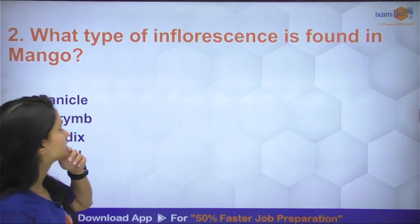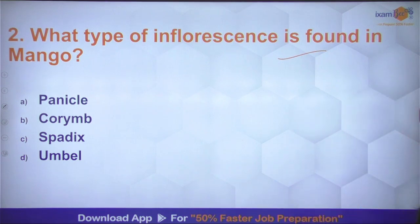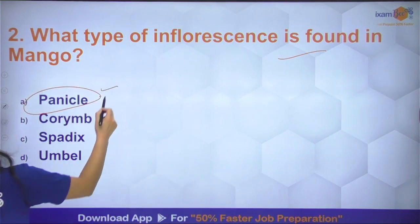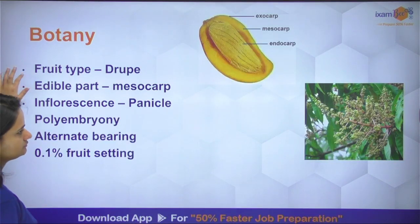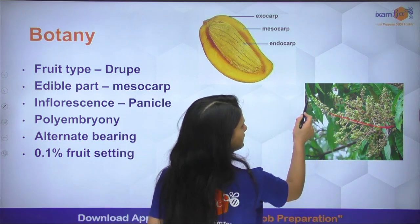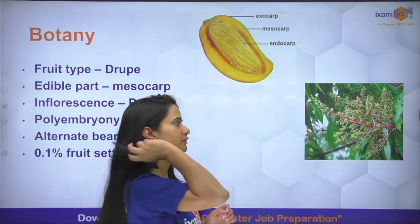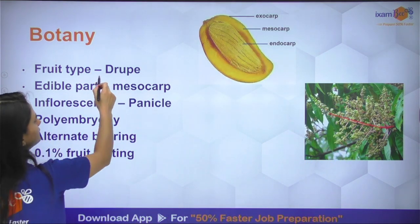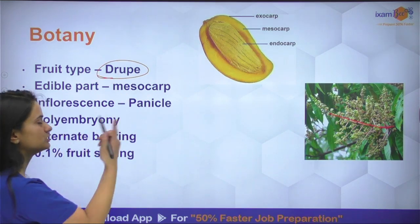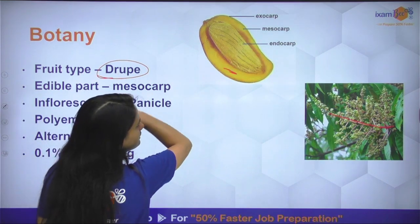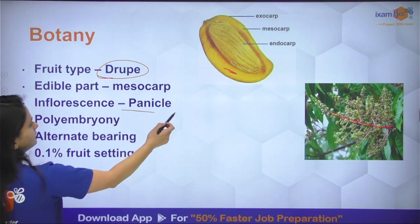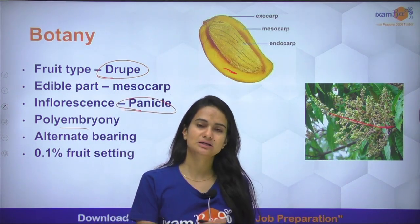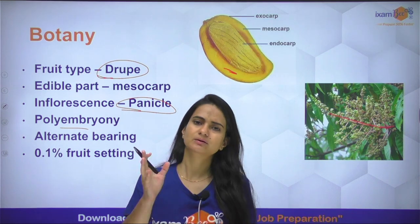Question number 2: what type of inflorescence is found in mango? Mango में panicle type का inflorescence पाया जाता है। एक stem या branch निकलती है और उसमें छोटे-छोटे flowers होते हैं — this is a panicle. Also important: mango is a type of drupe, edible part mesocarp होता है। Inflorescence panicle होती है। South Indian varieties generally polyembryonic होती हैं और North Indian varieties generally monoembryonic होती हैं।